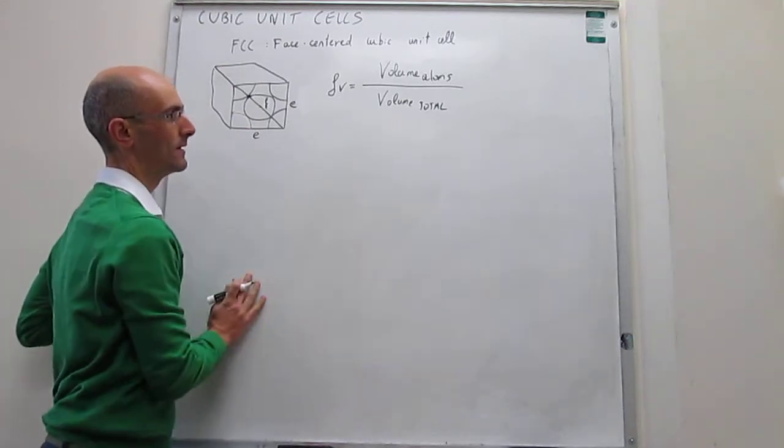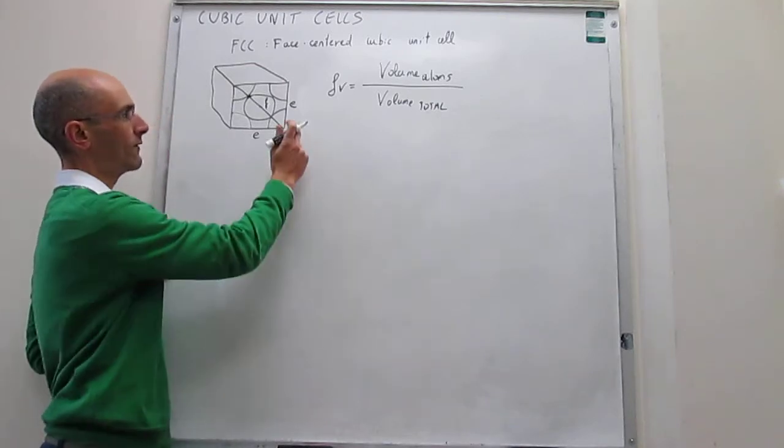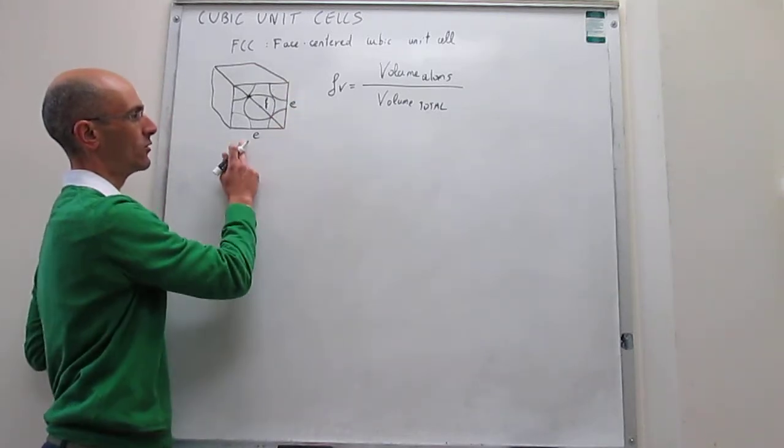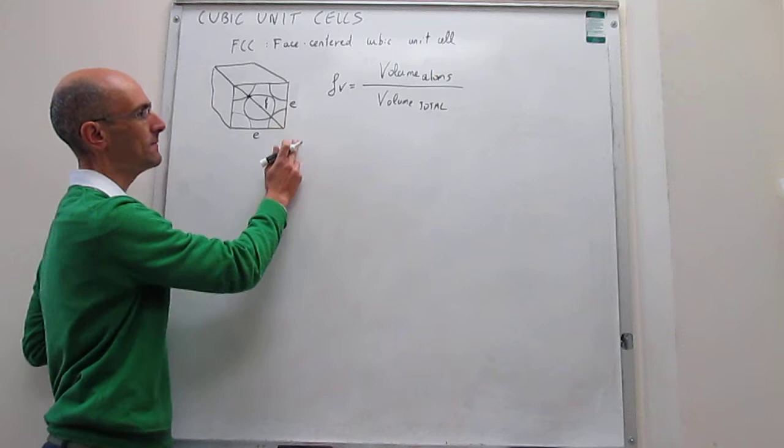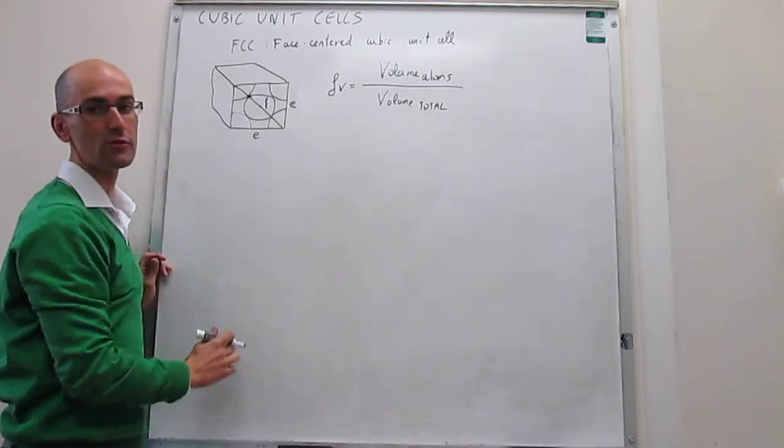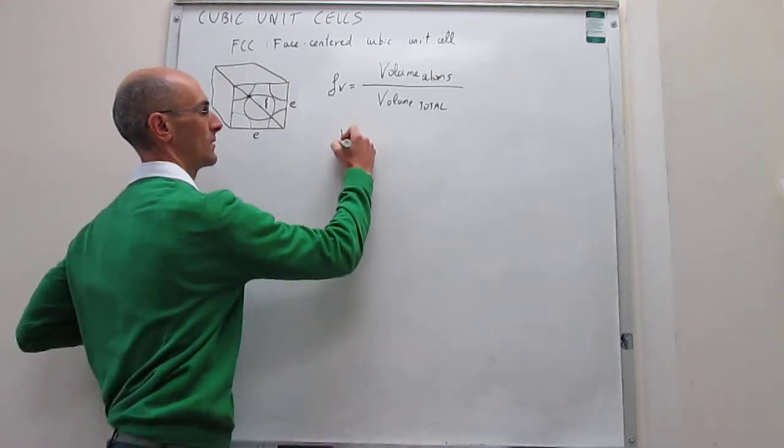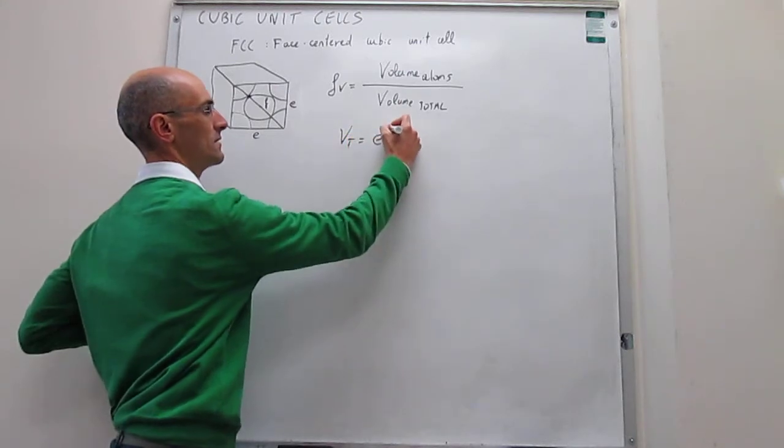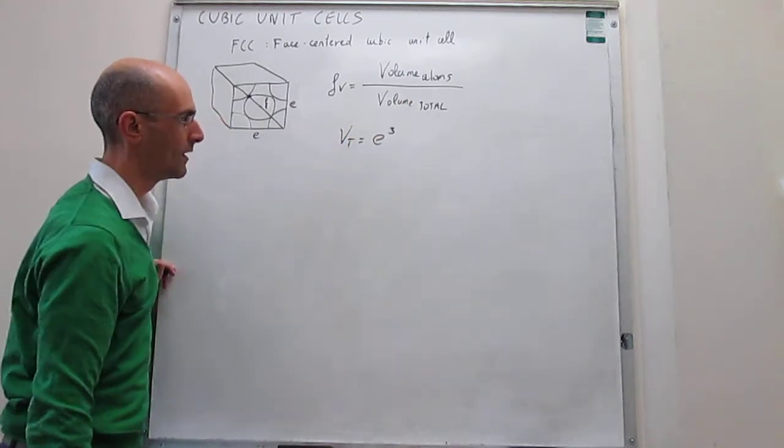So how do we calculate these two numbers? Well, the total volume seems straightforward. If we define the side of the cube, or the edge of the cube, as E, then the total volume is simply going to be equal to E cubed. So V_T is going to be E cubed.